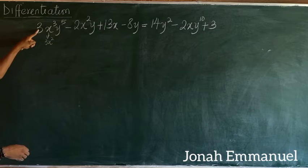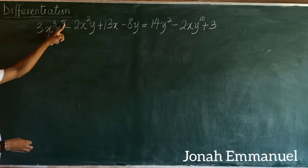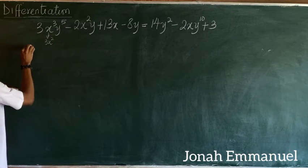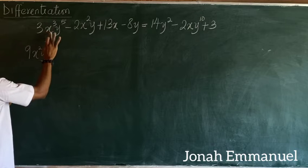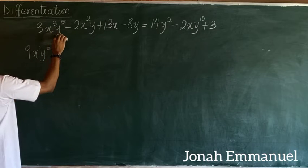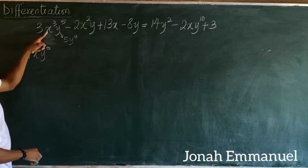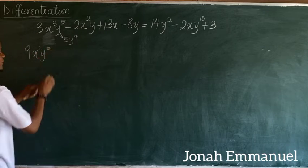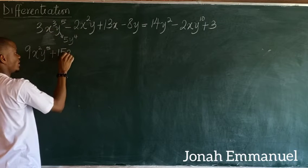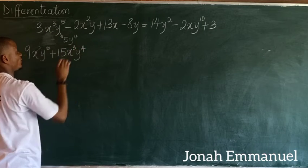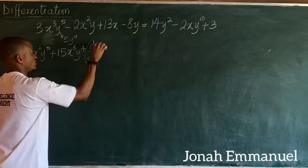Taking 3 times 3x² times y⁵ gives 9x²y⁵ for the first part. Then differentiating y⁵ gives 5y⁴, so 3 times 5 gives 15, making the second part 15x³y⁴. Since I'm differentiating y, I attach dy/dx.